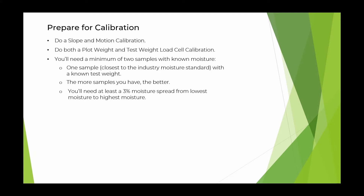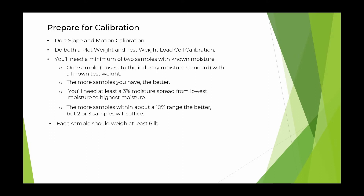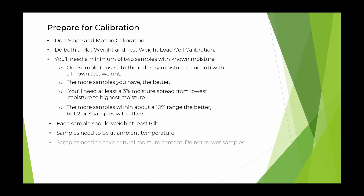You'll need at least a 3% moisture spread from lowest moisture to highest moisture. The more samples you have within about a 10% range, the better, but two or three samples will suffice. Each sample should weigh at least 6 pounds, and the samples need to be at ambient temperature. The samples do need to have a natural moisture content — no re-wetting of samples.